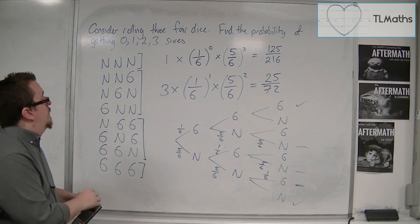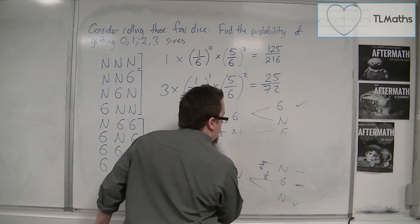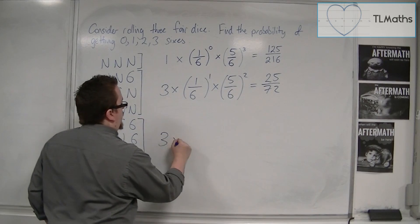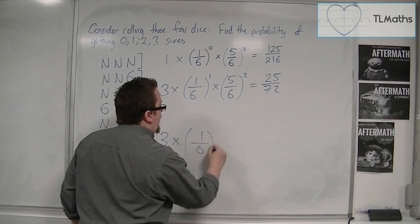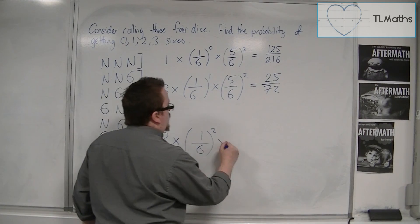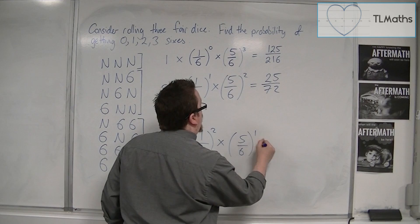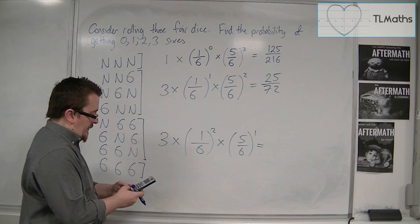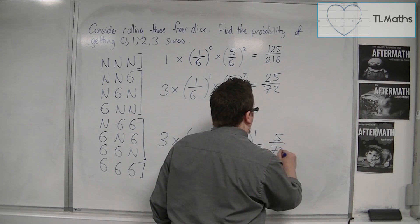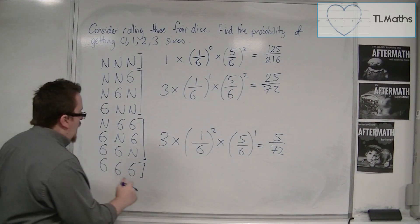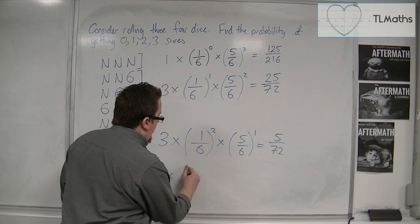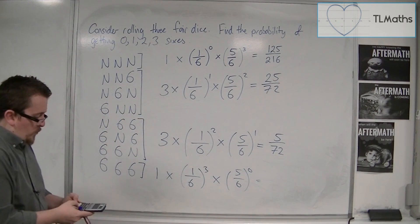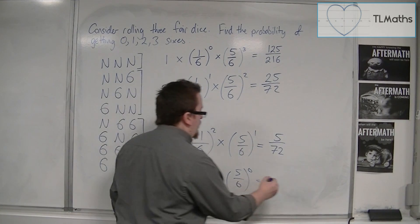In exactly the same way, for two 6s: we have 3 × (1/6)² × (5/6) = 5/72. And finally, there is one way of getting three 6s and not-a-6 zero times, so it's (1/6)³ = 1/216.